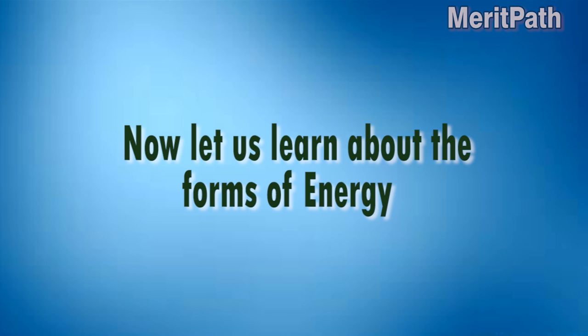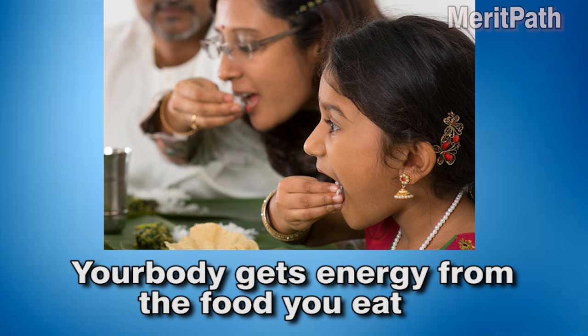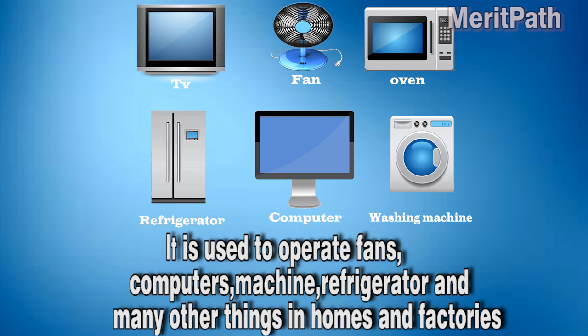Now let us learn about the forms of energy. You use energy from different sources in your day-to-day life. Your body gets energy from the food you eat. Electrical energy is used to operate fans, computers, machines, refrigerators, and many other things in homes and factories.